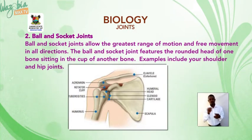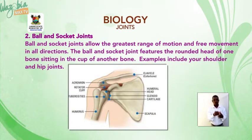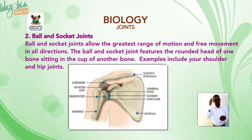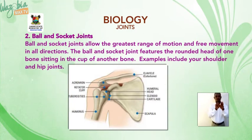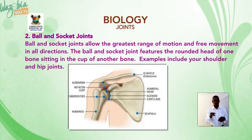Ball and socket joints allow a greater range of motion and free movement in all directions. The ball and socket joint features the rounded head of one bone sitting in the cup of another bone. Examples include your shoulder and hip joints.